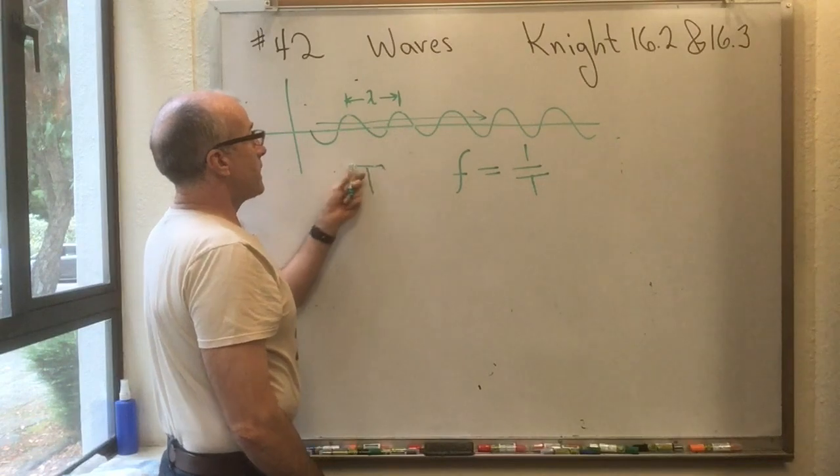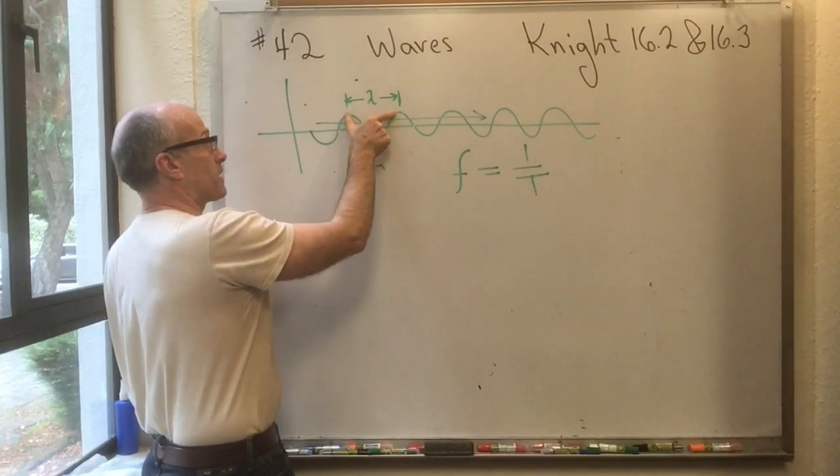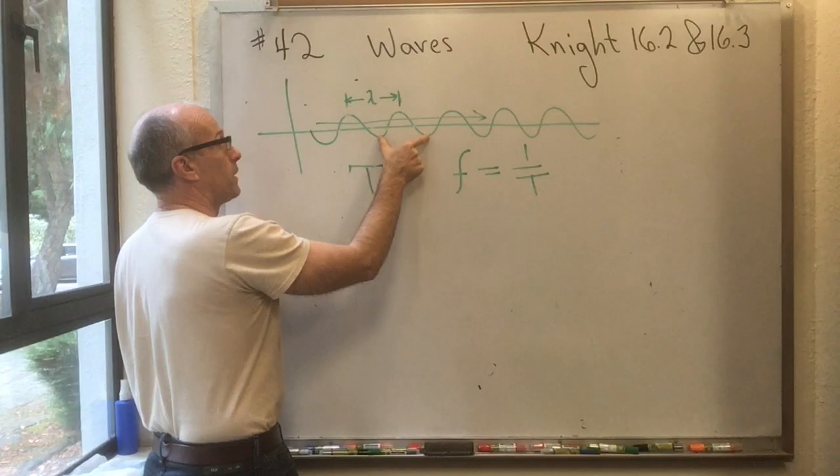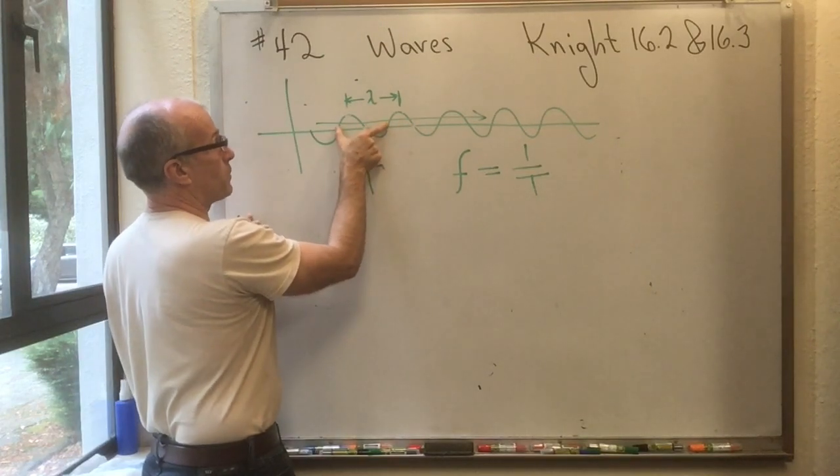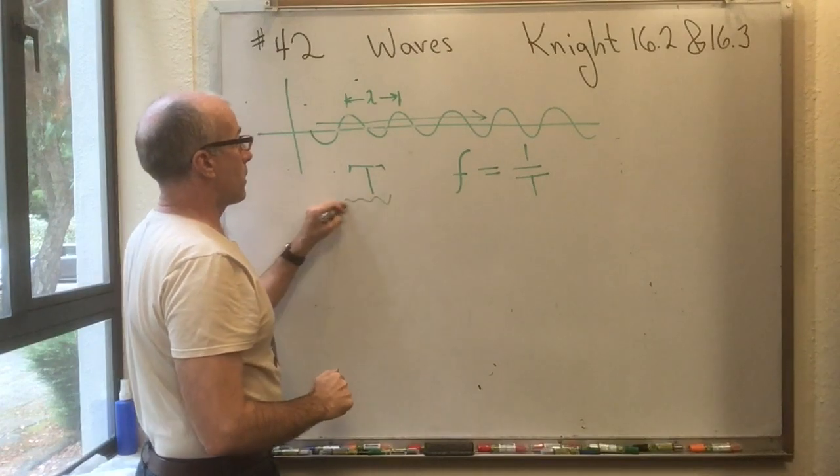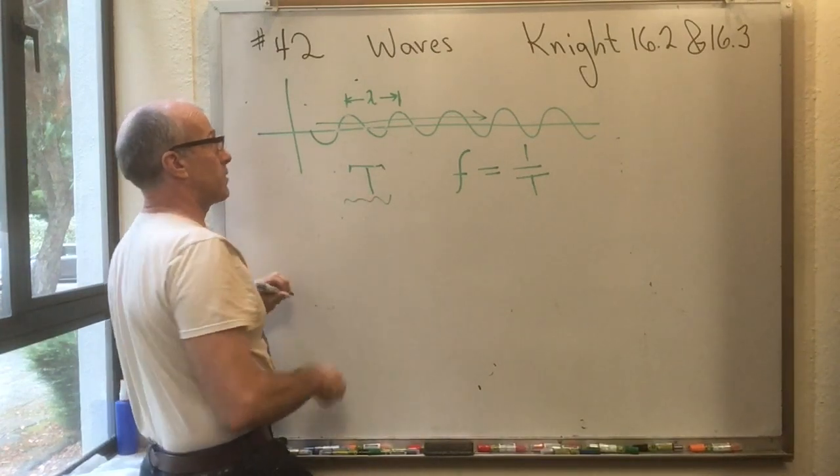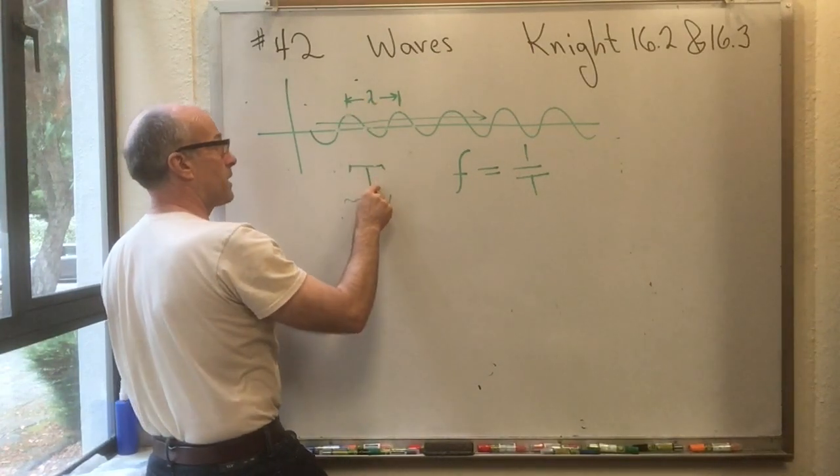And T is the time between crests, or the time between troughs, or the time between those two zeros. Those are all the period T. So you have the wavelength lambda and the period T.